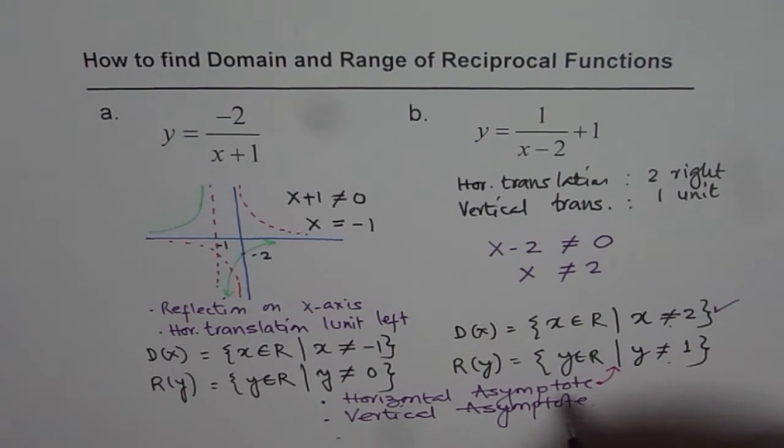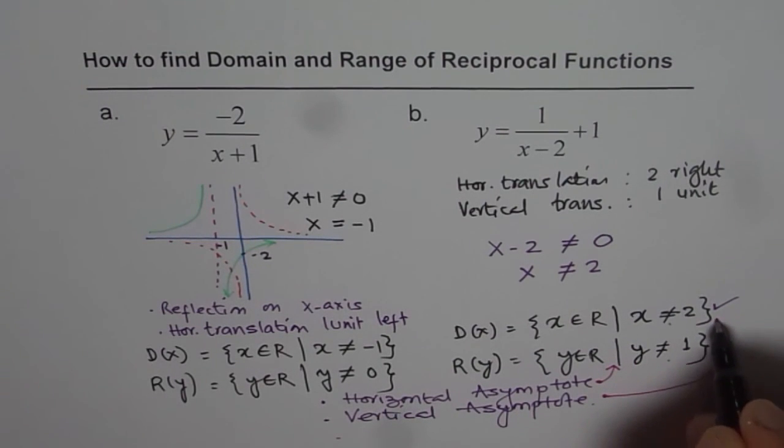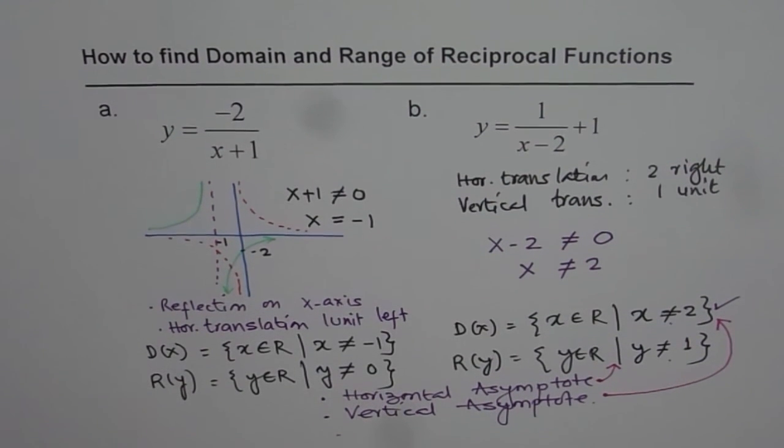And the vertical asymptote, translating left and right, will give you restrictions for domain. So remember this part. That is going to help you to find domain and range for reciprocal functions.